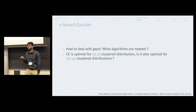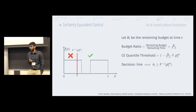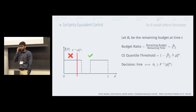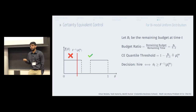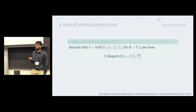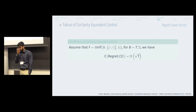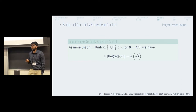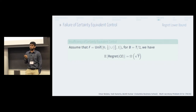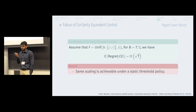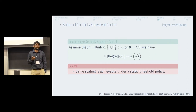The certainty equivalent hammer was optimal for the beta-1 clustered distribution. So the natural question is: how does it perform for beta-epsilon-naught clustered distributions? It turns out that certainty equivalent is insufficient to deal with gaps. Consider the simplest departure from a uniform distribution — introduce a gap between one-fourth and three-fourth with a budget of half the time steps. You can show the regret scales at least as Omega of square root T. In fact, this same scaling is achievable under a static threshold policy, meaning certainty equivalent — an adaptive policy — does as badly as a static threshold policy. This tells us that adaptivity alone is not sufficient.